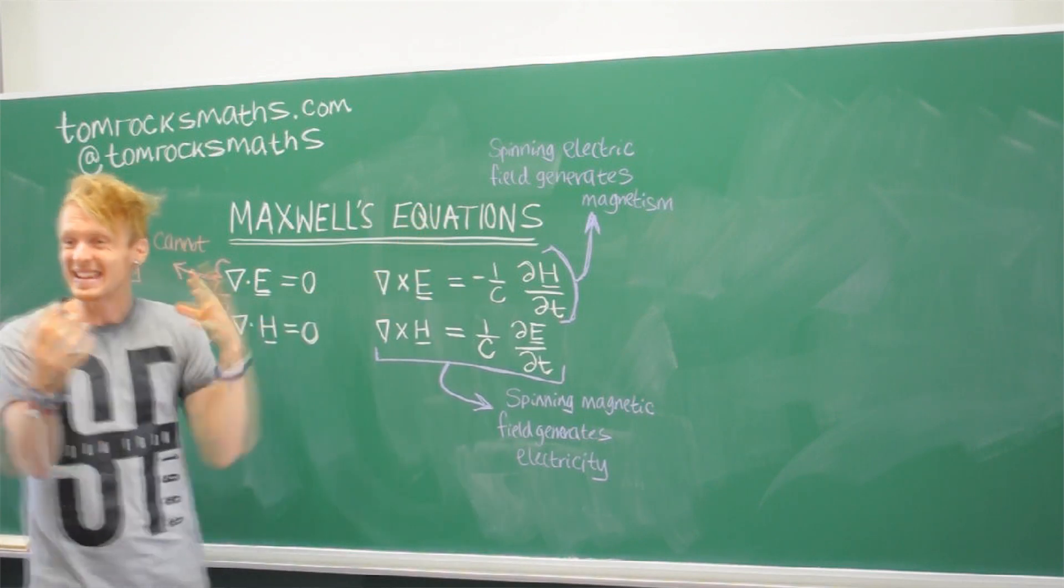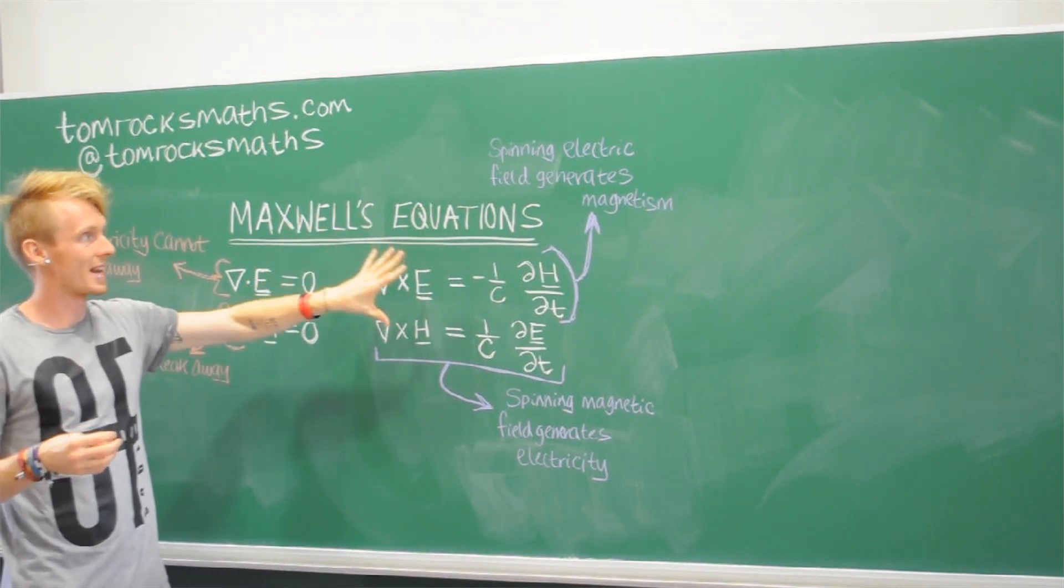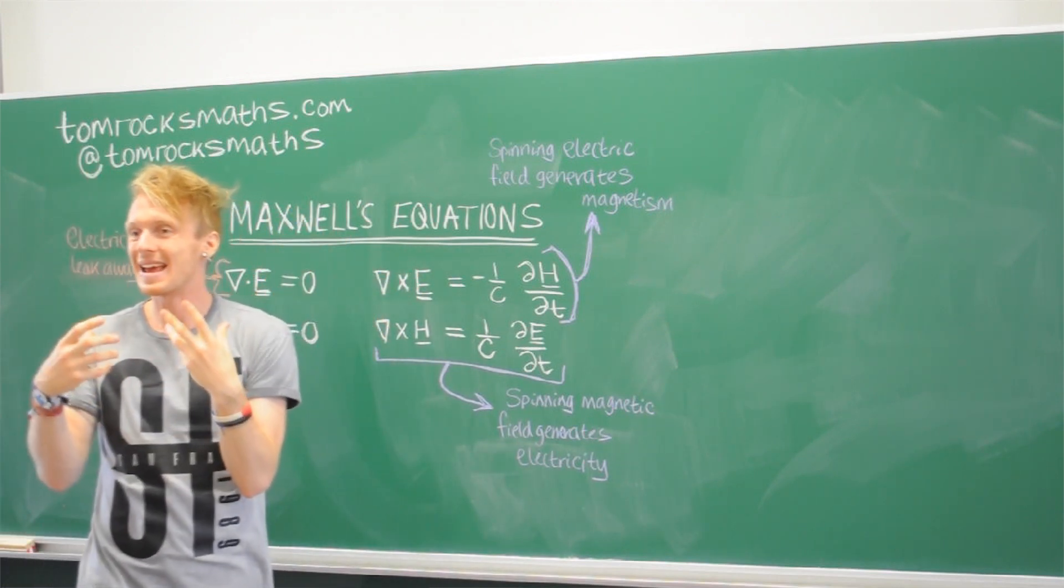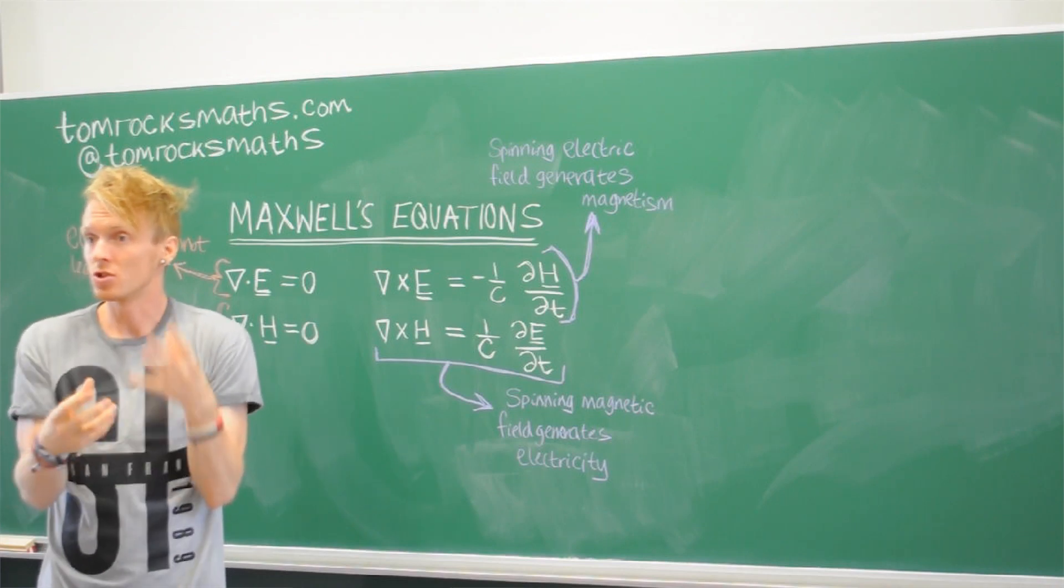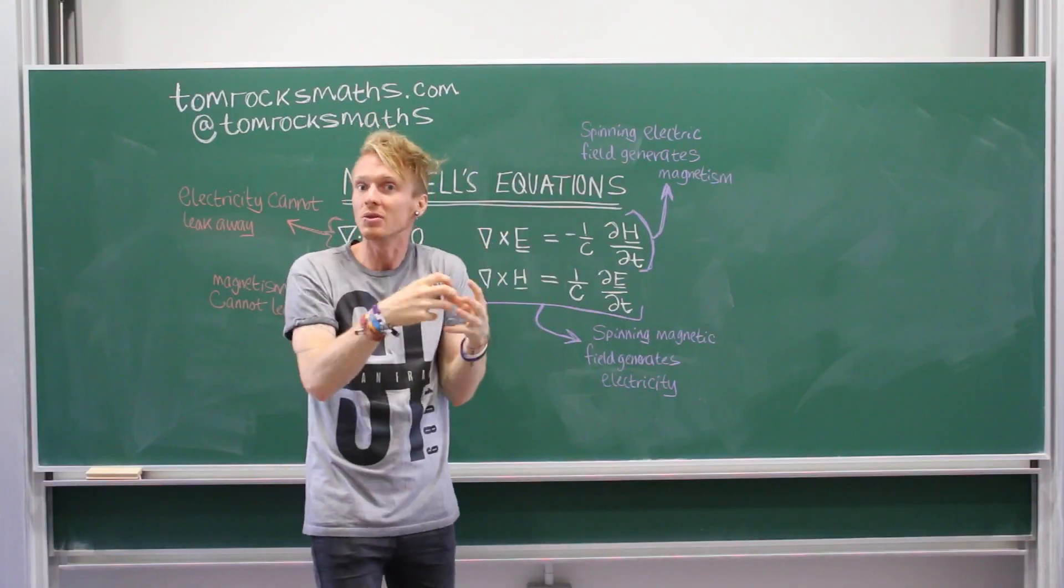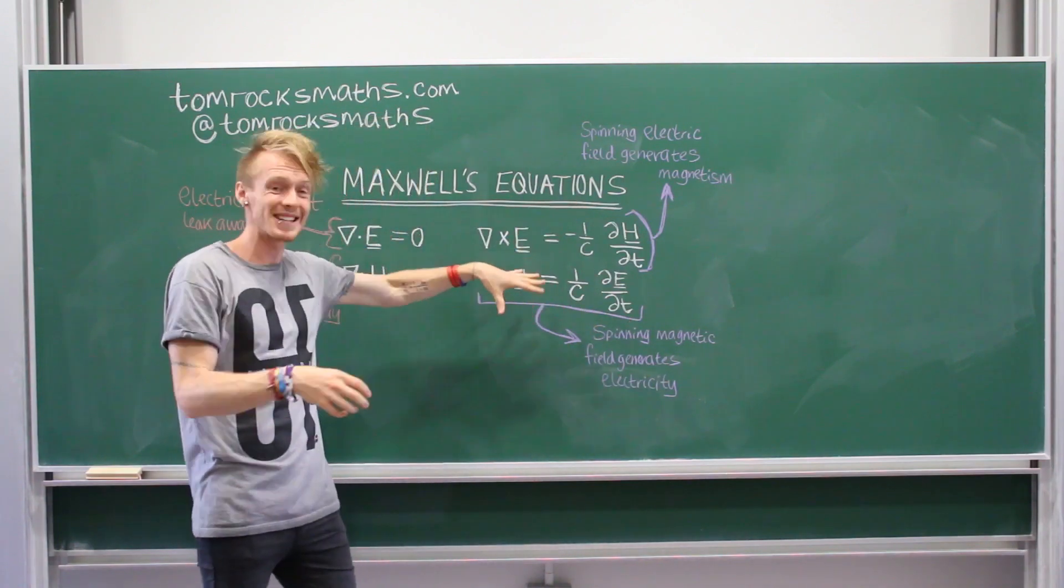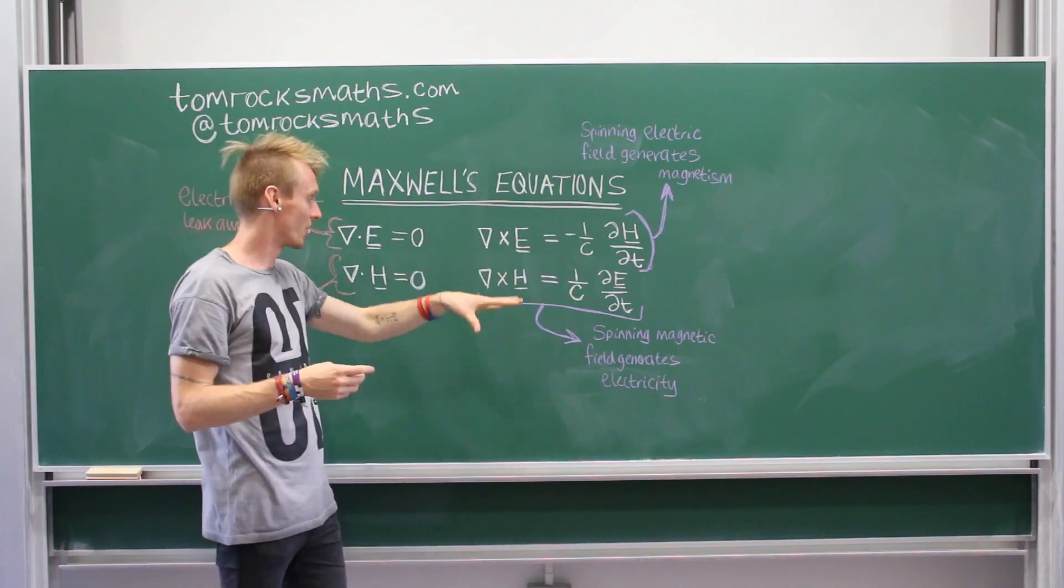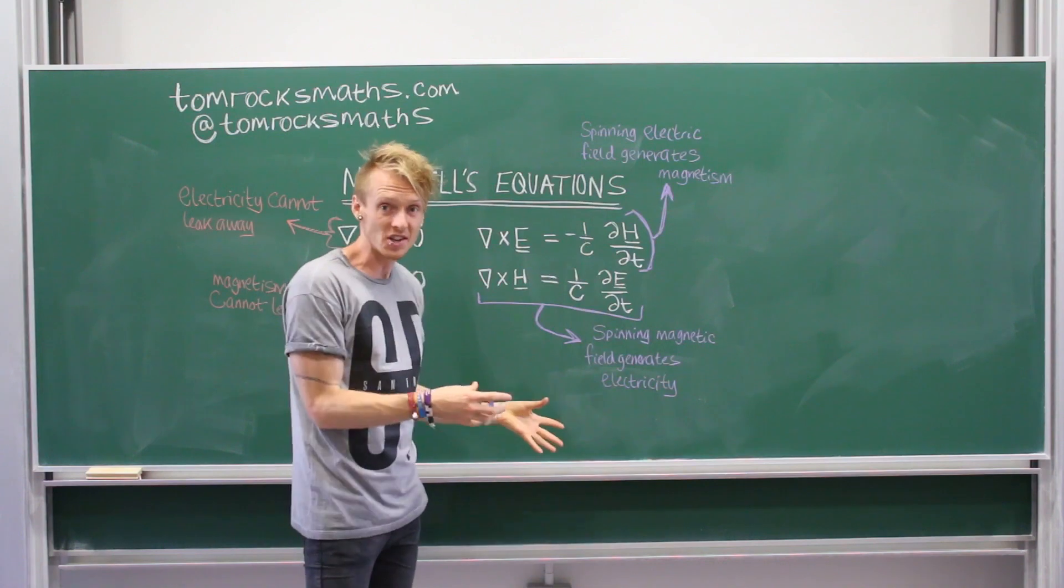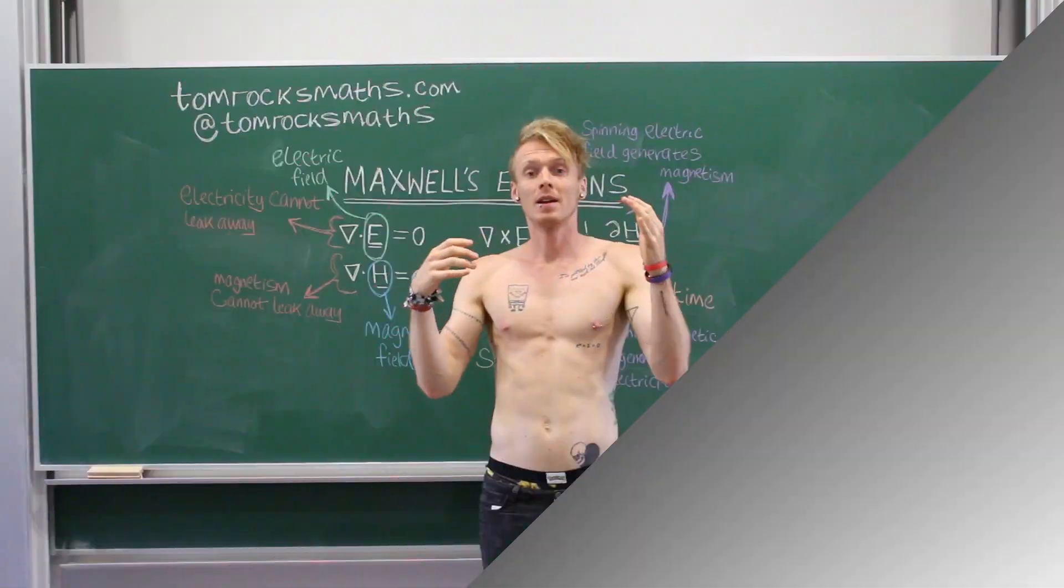And then our other two equations, again, they look very similar. And what the first one is saying is that if you have a spinning electric field, then it will generate a magnetic field. So, if you have a coil of wire and pass electricity through it, it will give you a magnet. It's called an electromagnet. And the second one says the same thing, but the other way around. So, a spinning magnetic field will give you electricity. If you have a magnet and you spin it, it will generate electricity.